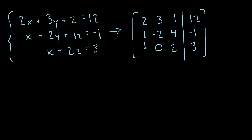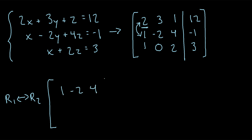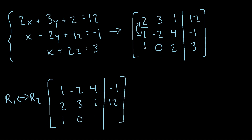Next, we need to use elementary row operations to transform this into reduced row echelon form. Recall that the first pivot entry — the first non-zero value in the first row — we want that to be a 1. An easy way to do that is to swap row 1 and row 2, since there's a 1 in row 2. That's a perfectly valid elementary row operation. So our first step is to swap row 1 with row 2. After swapping, we get row 1 as: 1, negative 2, 4, negative 1; row 2 becomes: 2, 3, 1, 12; and row 3 remains unchanged.